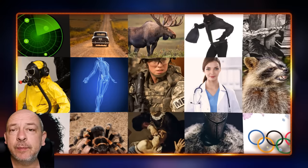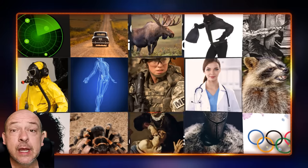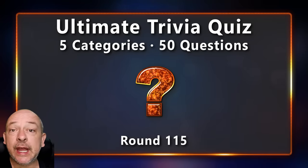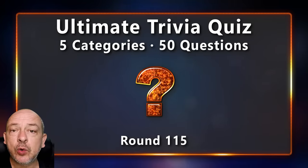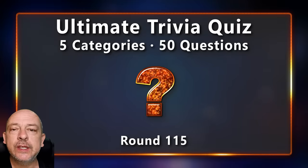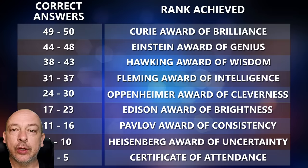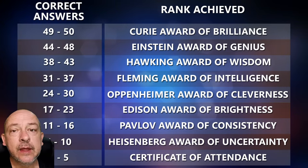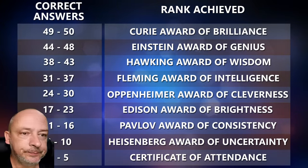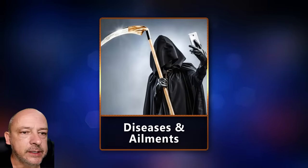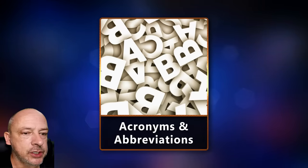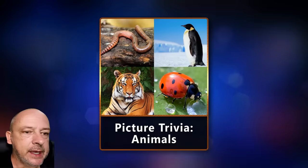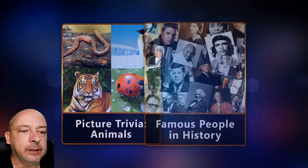Hello trivia friends and all you clever people, welcome to today's trivia quiz. My name is Sean, I hope that you are doing well. This is round 115 of the Ultimate Trivia Quiz — 50 questions as always. Keep track of how many questions you can answer correctly and check the end of the video to see which rank you manage to get. The topics for today's quiz are diseases and ailments, acronyms and abbreviations, mixed trivia, picture trivia, and famous people. Let's begin!